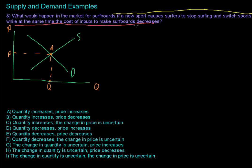So first, the new sport. This new sport is causing surfers to stop surfing and switch sports. That's going to influence the preferences for surfing, because less and less people are going to want to surf. They're going to want to do this new sport, so that will lead to a decrease in demand. Demand will shift from this green line that's labeled D to the yellow one that's labeled D'.